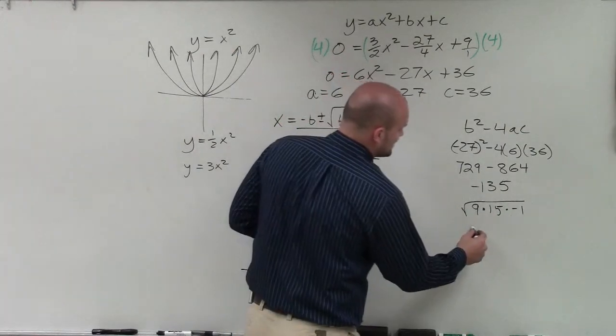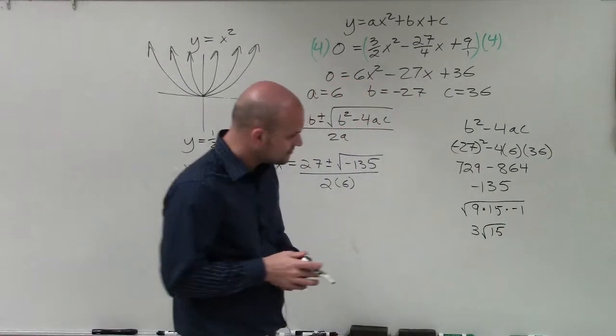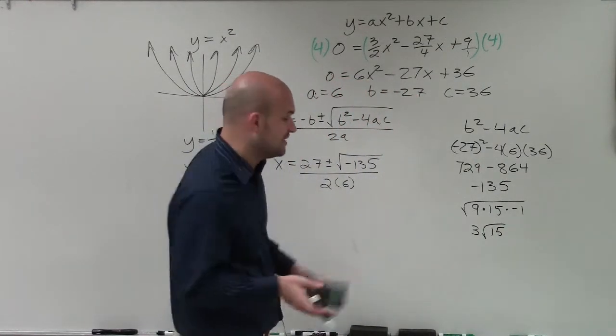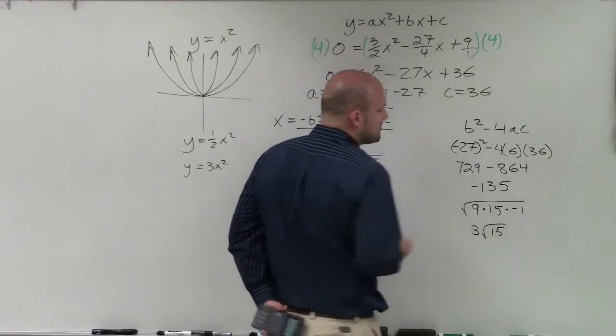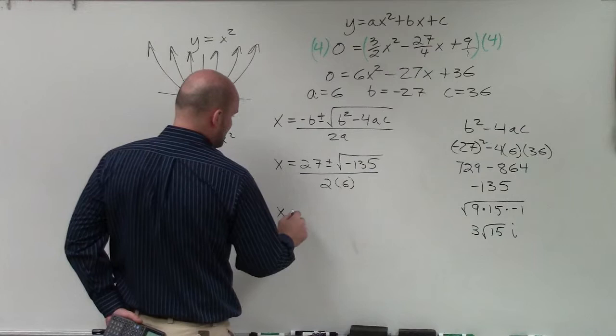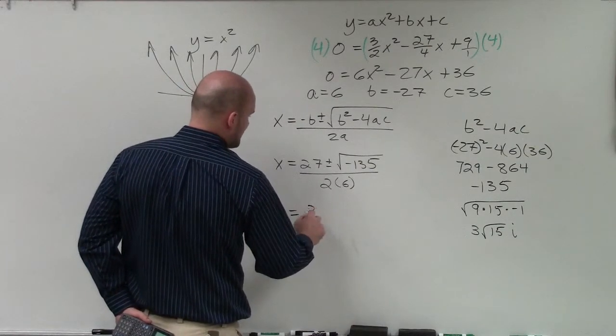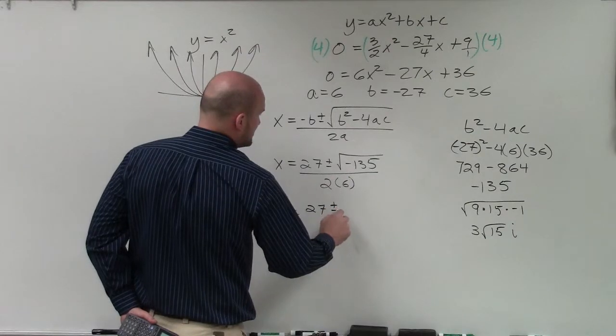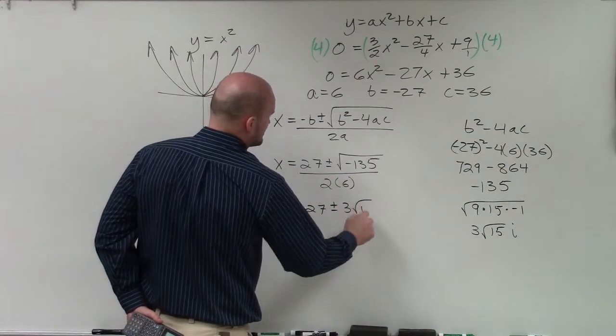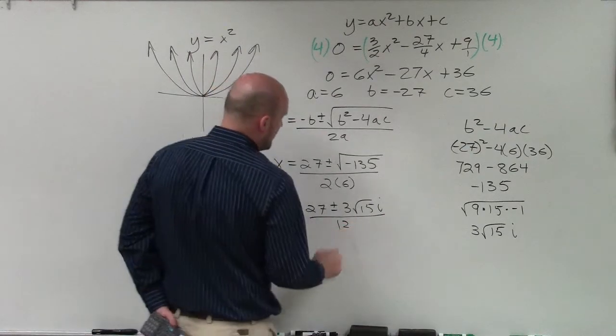So the square root of 9 is 3. The square root of 15, we cannot take the square root. So we're going to leave it under the square root. And now we represent the square root of negative 1 as i. So now I'm going to represent that in there. So I have x equals 27 plus or minus 3 times the square root of 15i, all divided by 12.